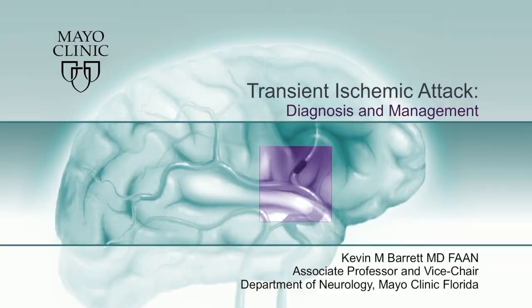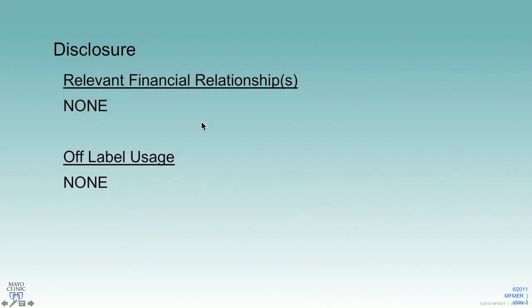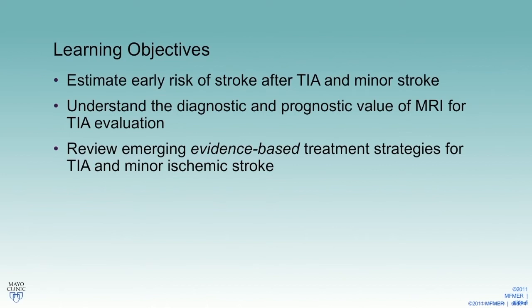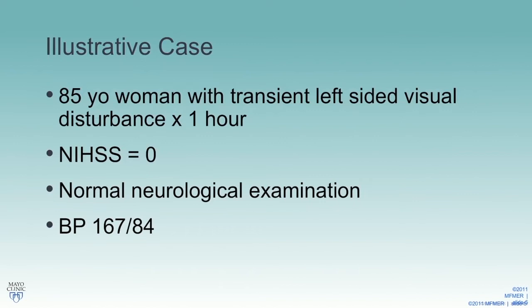We'll circle back on TIA and emphasize three points. Those three points are some practical pearls for diagnosis — we know that TIA can sometimes be a difficult diagnosis. We're going to talk about early and longer-term risk of stroke after TIA, and then we'll talk about some of the good evidence we have now for emergent therapy for high-risk TIA and minor ischemic stroke. So we'll focus on those three takeaways.